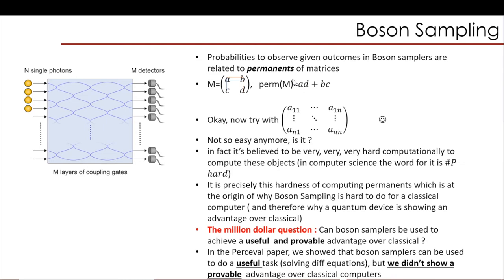But how about trying it with this guy here? It's not so simple anymore, is it? It's a huge process to do it. And in fact, it's believed to be very, very hard to actually compute this object here. We have a word for it in computer science: it's called sharp-P hard. And it is this exact reason why boson sampling admits a quantum advantage. Because the probabilities of boson samplers are given by permanents, and because permanents are really hard to compute, it is why boson sampling does something quantumly which a classical computer cannot do. It is because of these permanents.